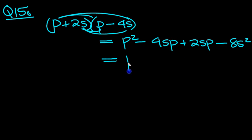So what do we have? We have a P squared. We have minus 4sp plus 2sp, which adds up to minus 2sp. And we have minus 8s squared.